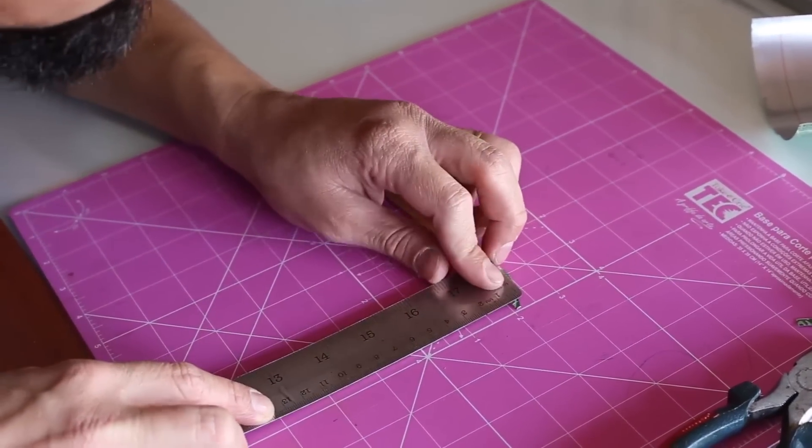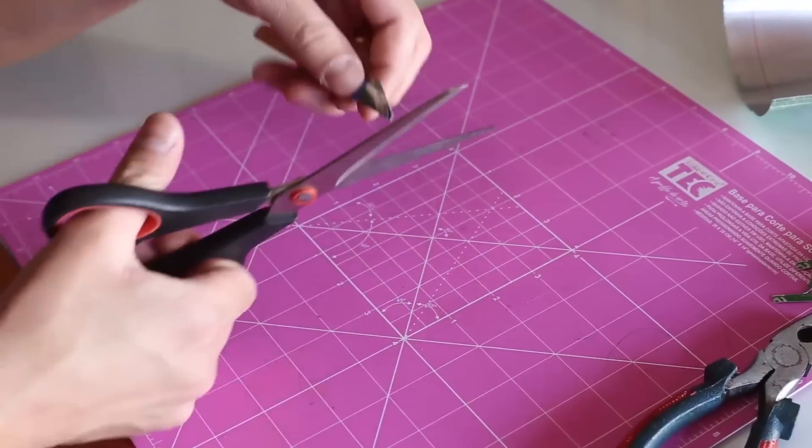Cut the nib to a width of 6mm or about a quarter inch.